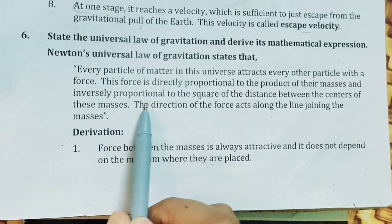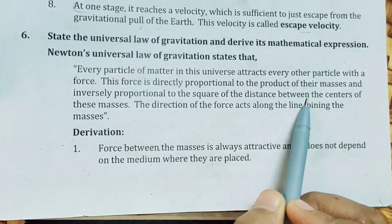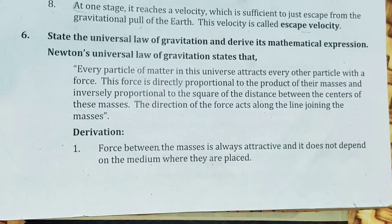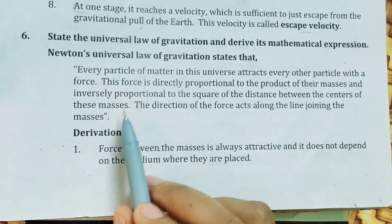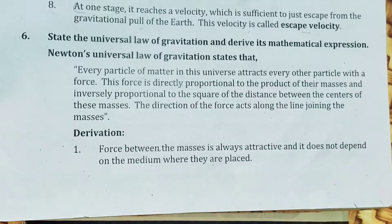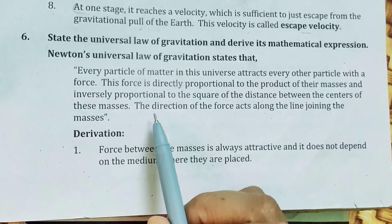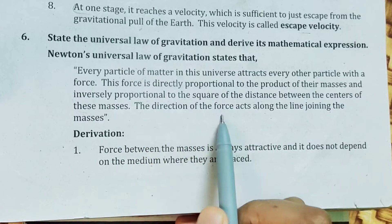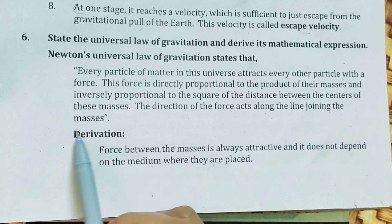And inversely proportional to the square of the distance between them. Mass is directly proportional; distance between them is inversely proportional — specifically the square of the distance. The direction of the force acts along the line joining the masses.